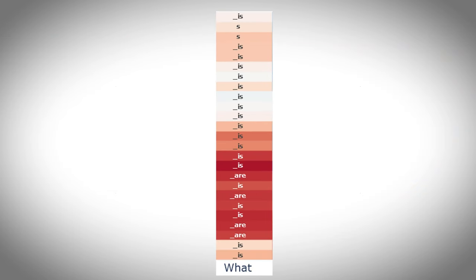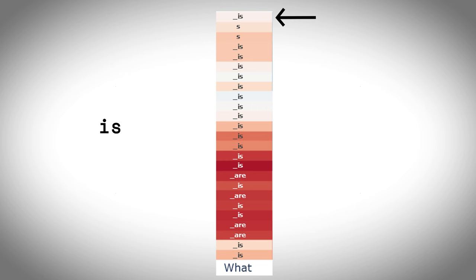Here we see that the large language model guesses almost immediately after seeing the word 'what' that the next word will be 'is.' And as we move from the bottom — the start of the computation — to the top, the end of the computation, this prediction is not changing much.